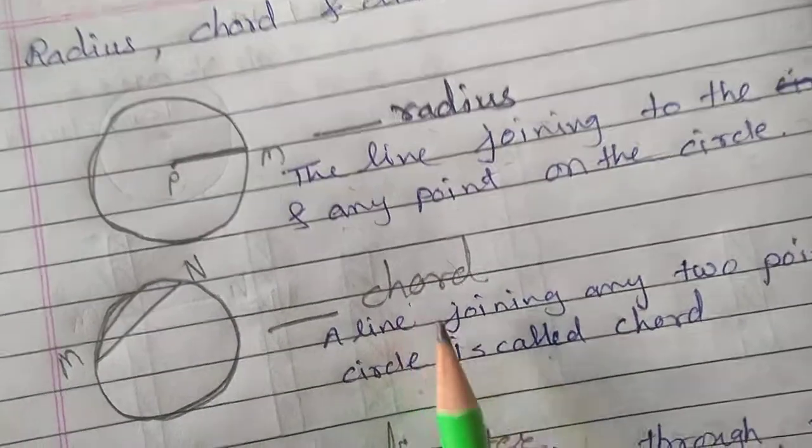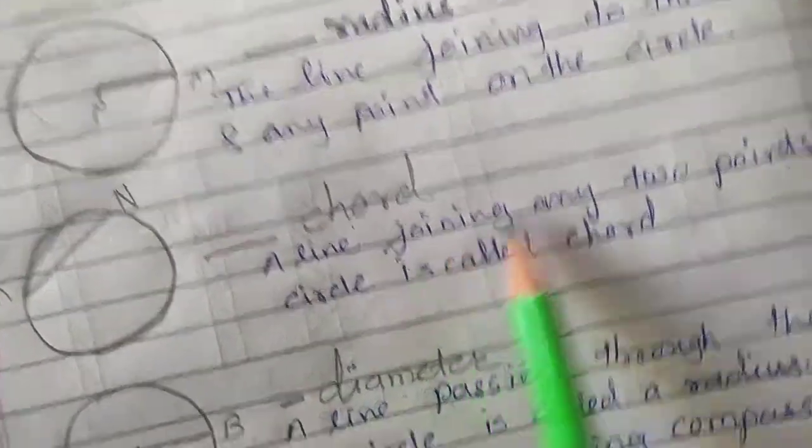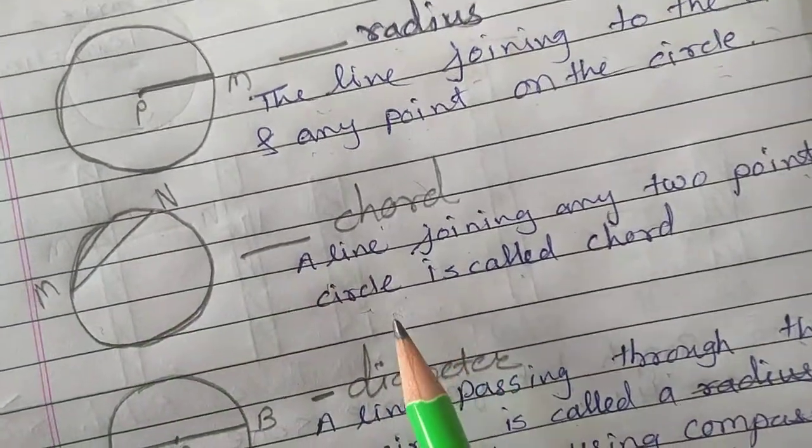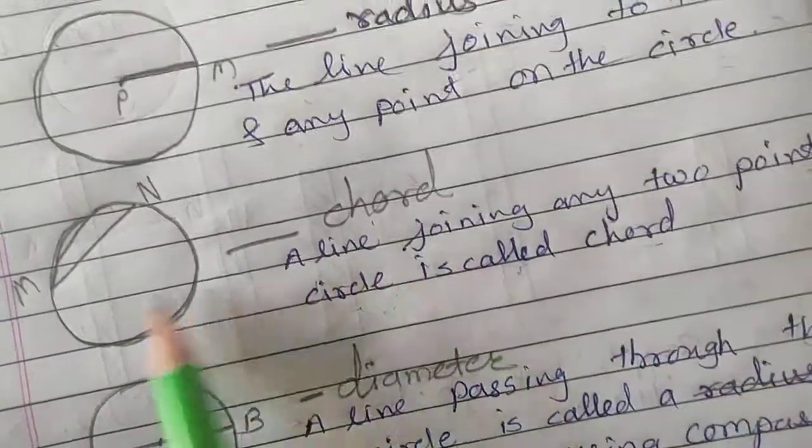Here, chord. A line joining any two points on the circle, means M and N, is called chord.